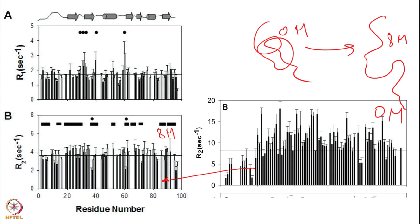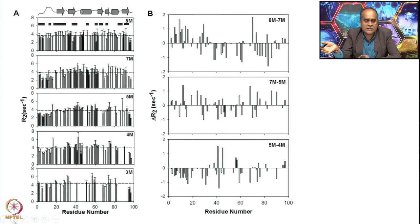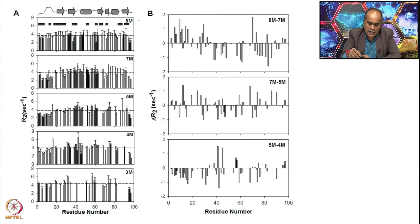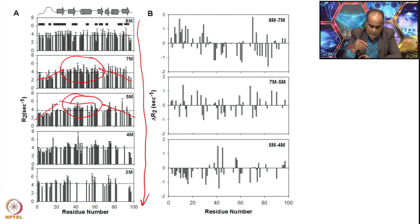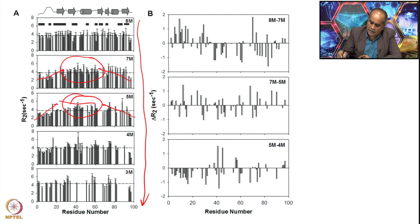This demonstrates that dynamics measurements tell us about structural compaction, flexibility, and rigidity in a residue-specific manner. Furthermore, R2 can monitor protein folding: at 8 M urea R2 is flat, but as urea concentration decreases (e.g., to 5 M), the central region — corresponding to the structured core — builds up, identifying folding hot spots and showing where structure forms during refolding.